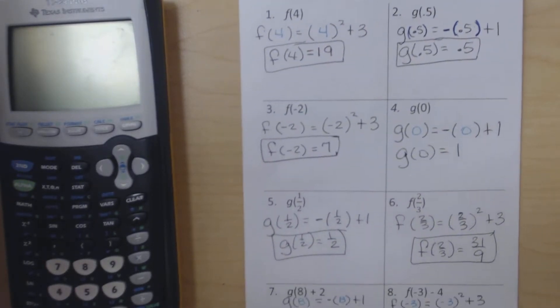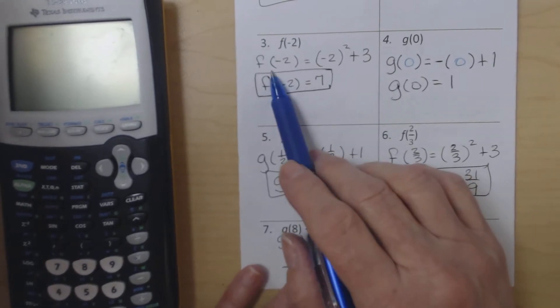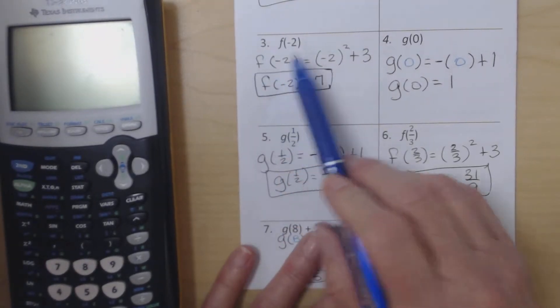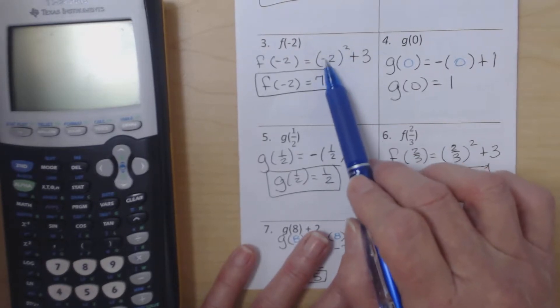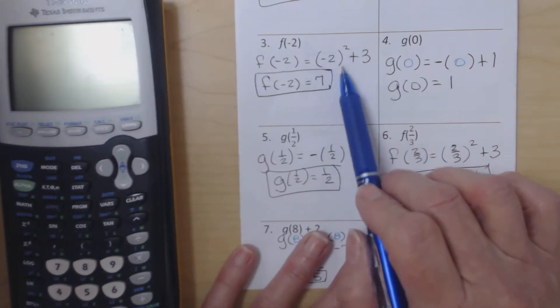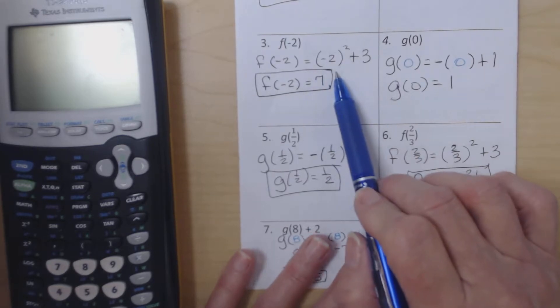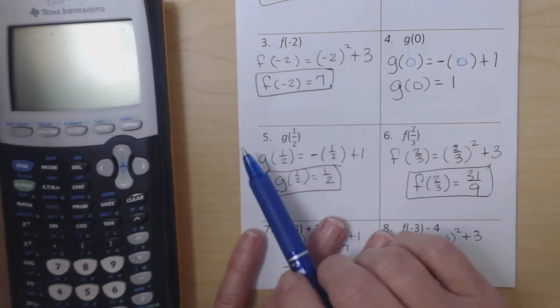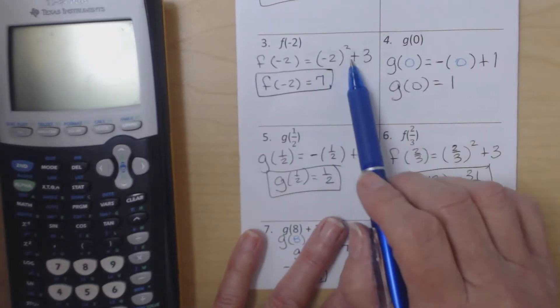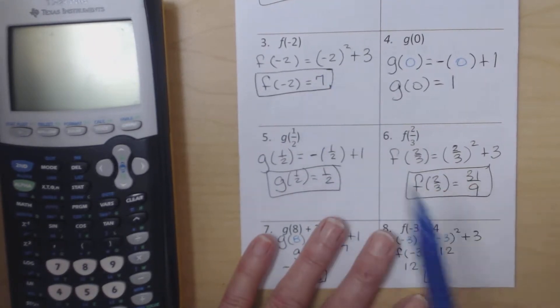We have done the same thing for the others on this page. So here we have f(-2) equals (-2) squared because x is -2, and it goes inside the parentheses because the parentheses basically represents the x. The x is being squared, so the parentheses is being squared. So (-2) squared plus 3, and that gives us 7.